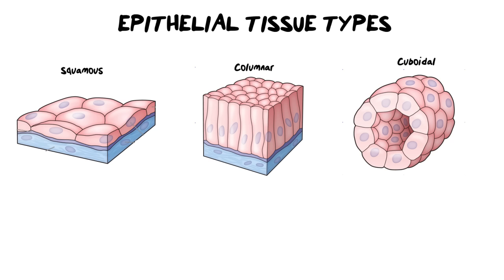Let's look at the three most basic shapes that we find epithelial tissue in: squamous, columnar, and cuboidal. These tissues are largely based on their shape, and that's where they get their name from. We're going to look at their functions and how best to identify them.